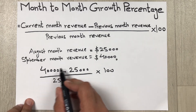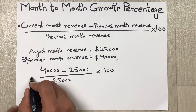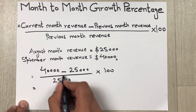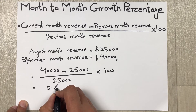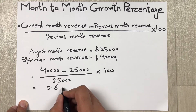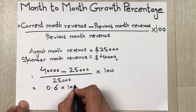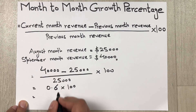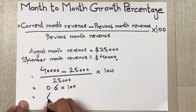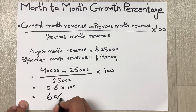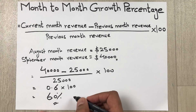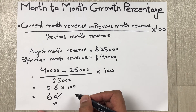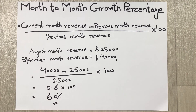When we do this calculation, our answer will be 0.6. Multiplying by 100 gives us 60%. So 60% is your month-on-month growth percentage.